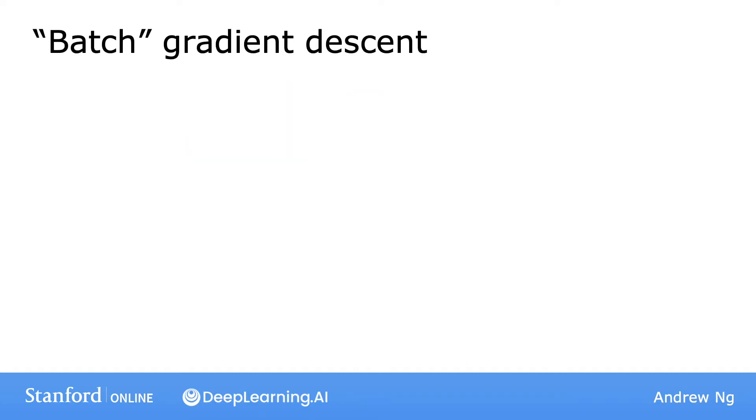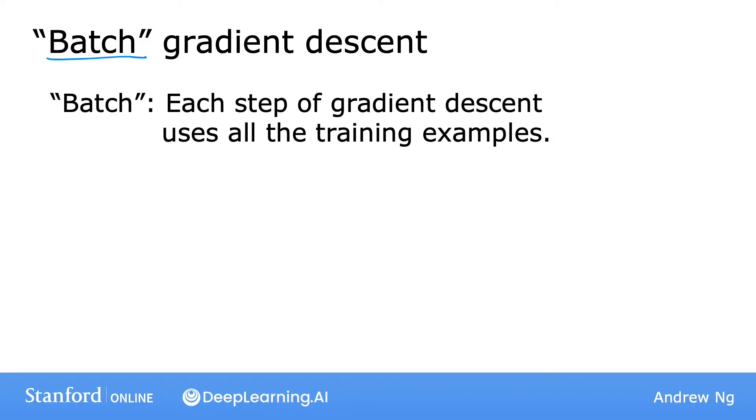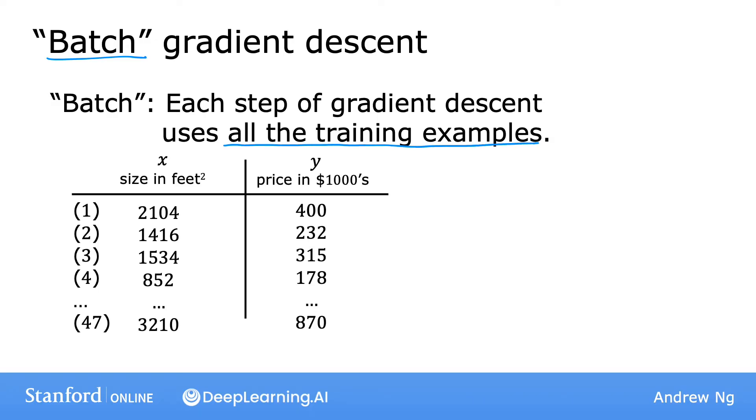To be more precise, this gradient descent process is called batch gradient descent. The term batch gradient descent refers to the fact that on every step of gradient descent, we're looking at all of the training examples instead of just a subset of the training data. When computing derivatives, we're computing the sum from i equals 1 to m. Batch gradient descent is looking at the entire batch of training examples at each update. I know that batch gradient descent may not be the most intuitive name, but this is what people in the machine learning community call it.